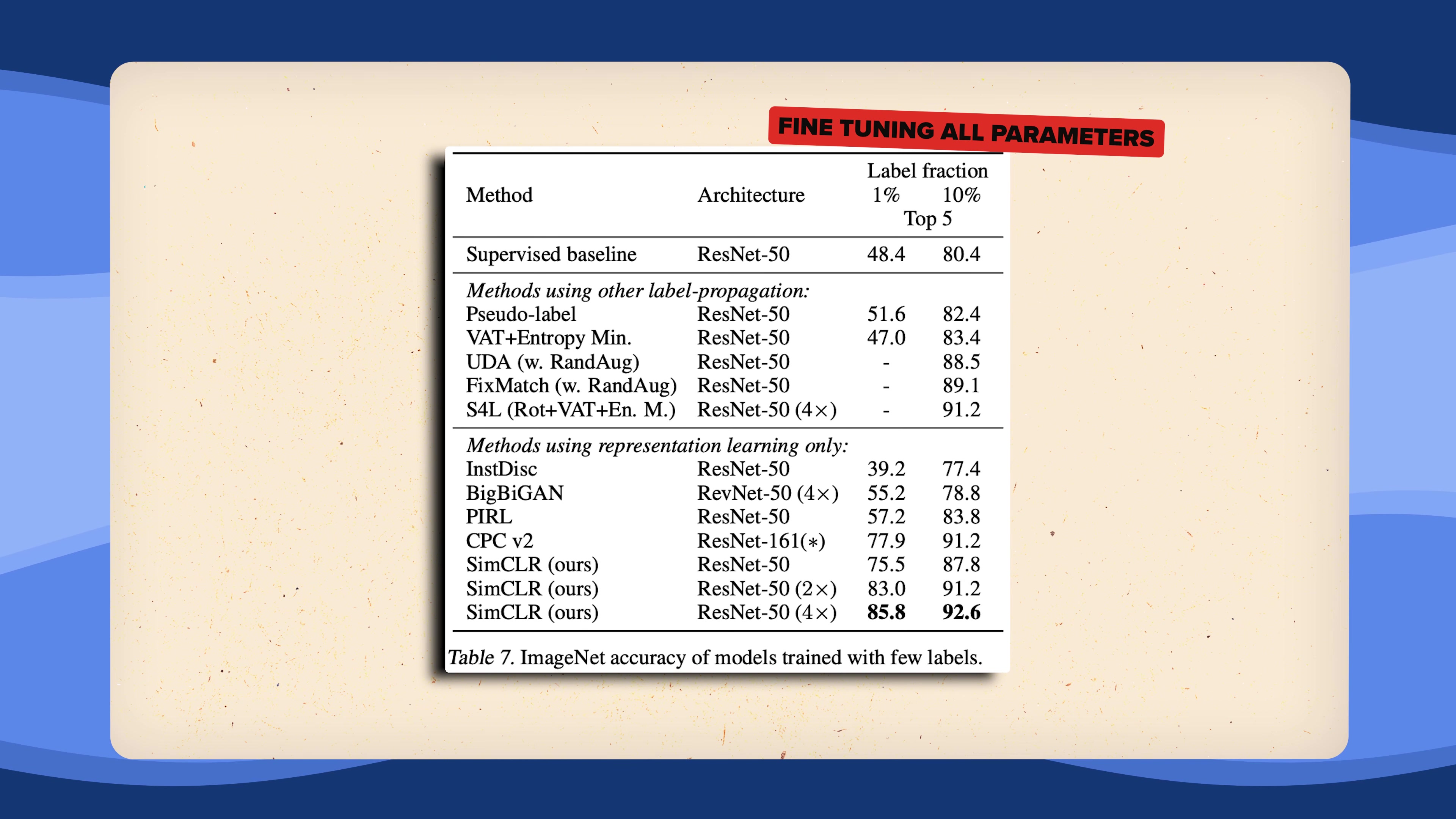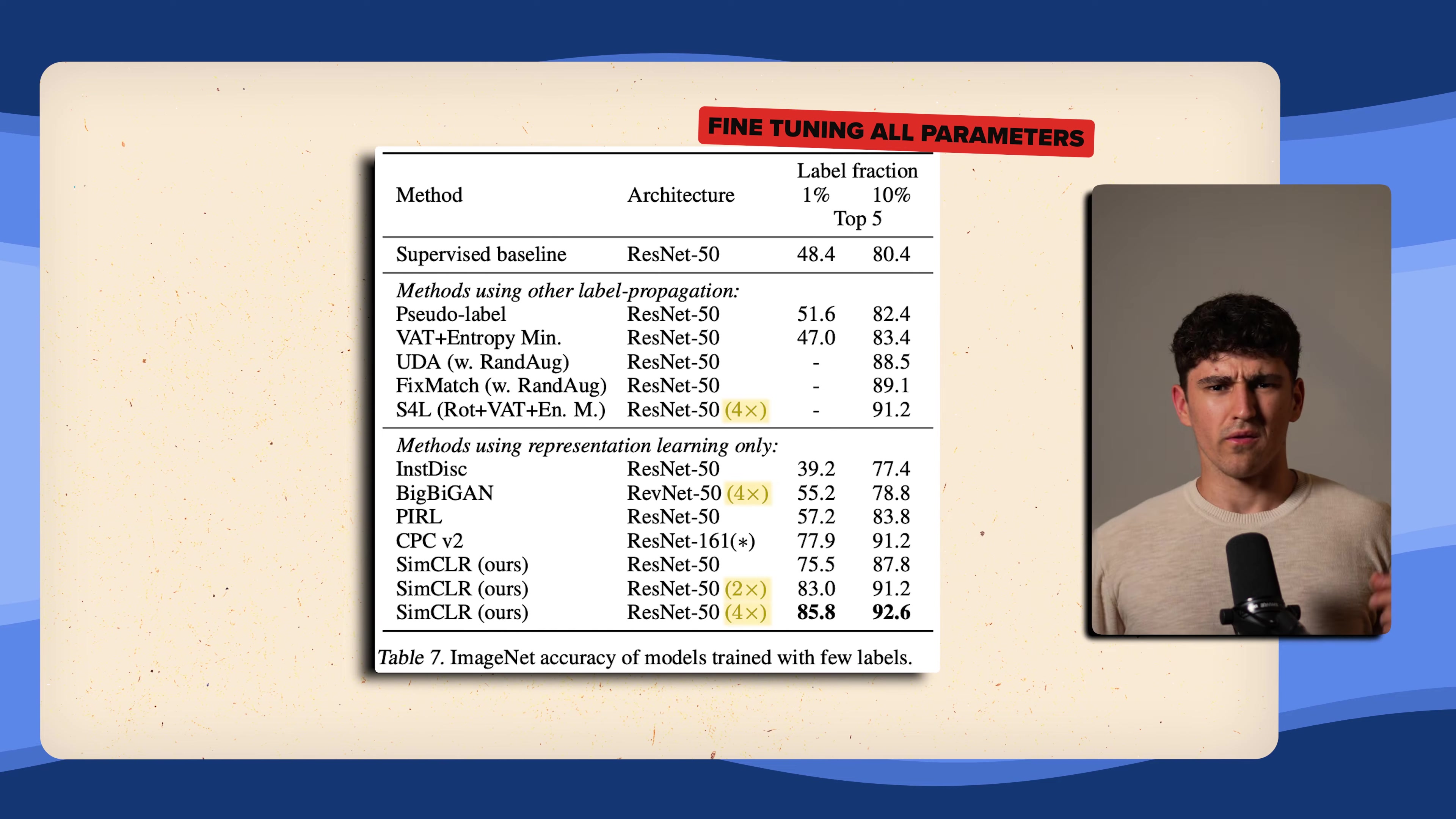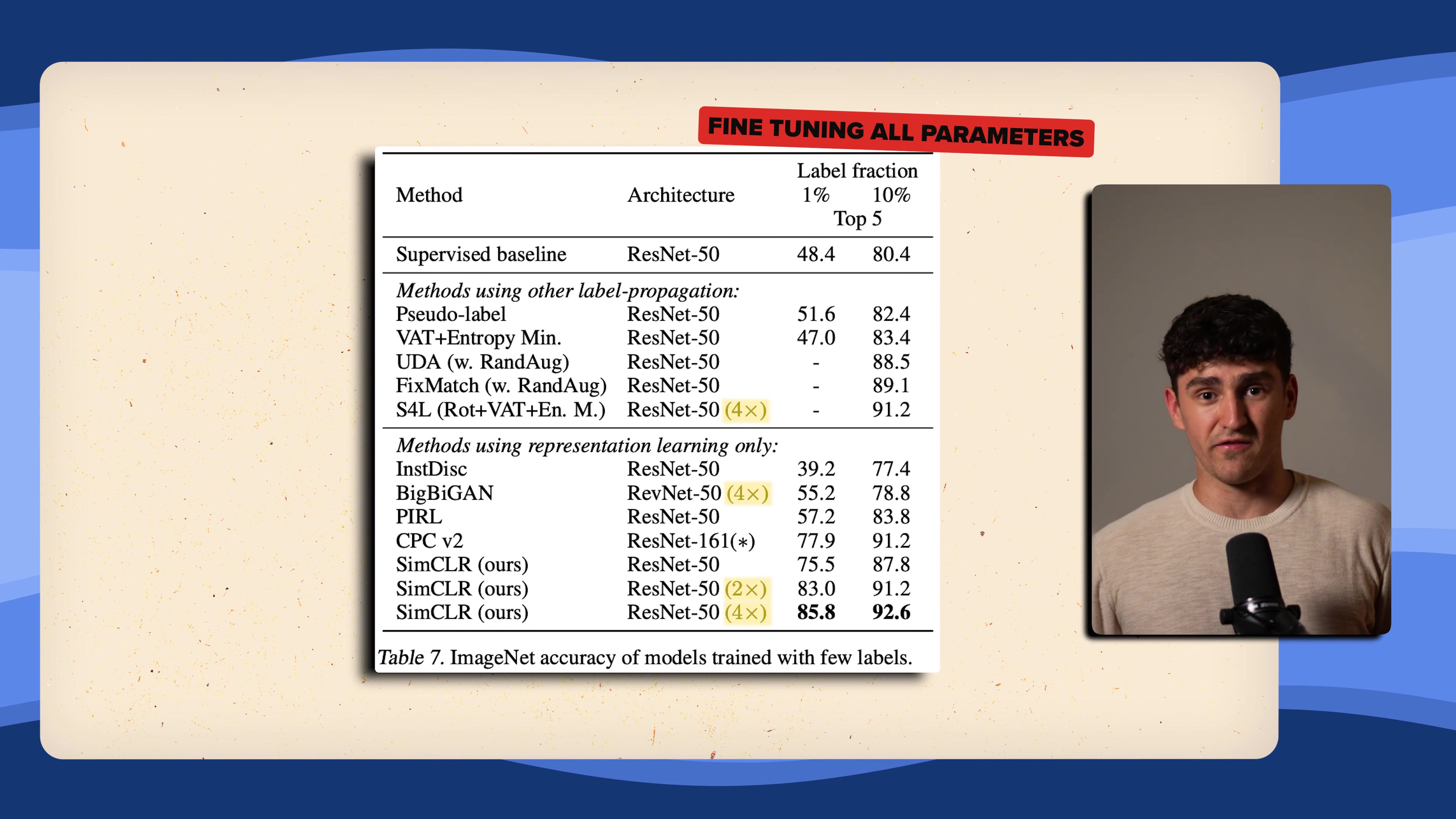When comparing SimCLR to different approaches that all use the ResNet-50 architecture and either supervised or representation learning only as pre-training, we can clearly see that SimCLR outperforms all of them, especially the larger models, meaning models where the width or number of neurons in a layer of the model are increased by 2x or 4x respectively.